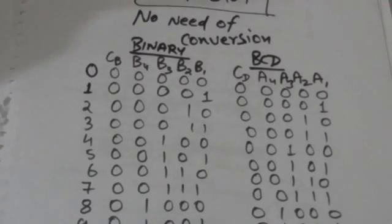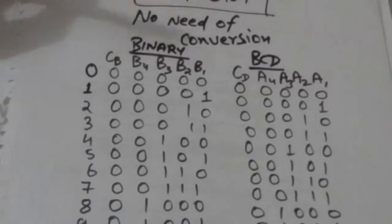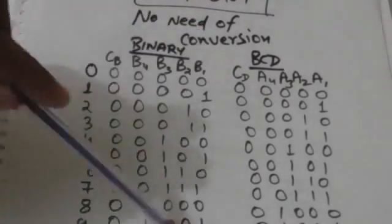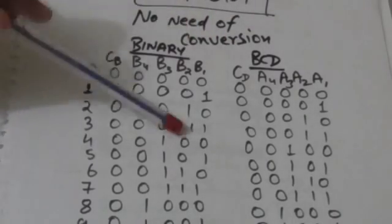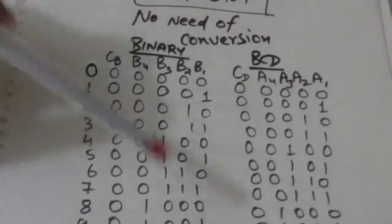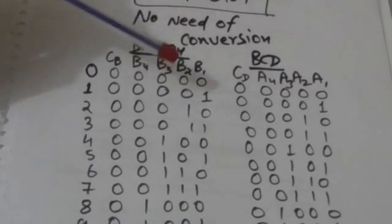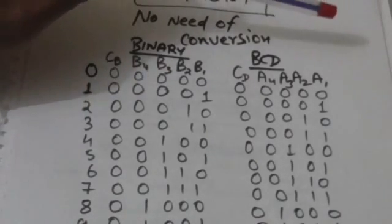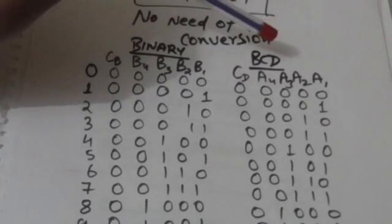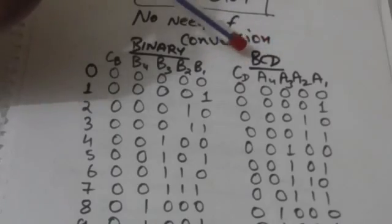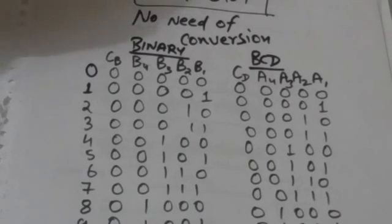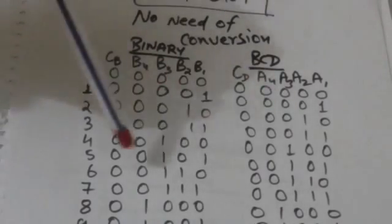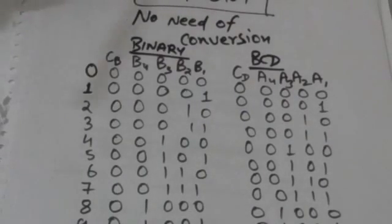The first column shows the output of the 4-bit binary adder in binary form, and the second column shows the required output in BCD form. When the value of the sum is between 0 and 9, there is no need for conversion.